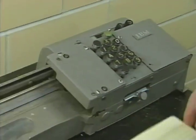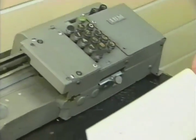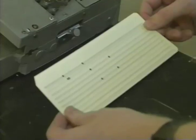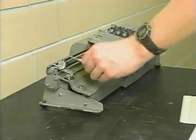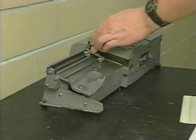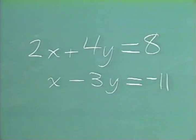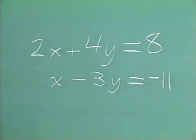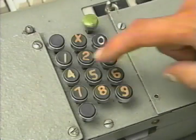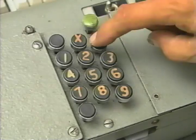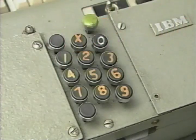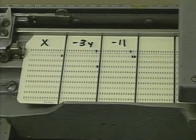You may have noticed that we're using only whole numbers. The ABC did not use floating decimal points, so you scale up the numbers until everything is to the left of the decimal point. We'll also make the card for the second equation: x minus 3y equals negative 11, so we enter 1, minus 3, and minus 11. Notice that to make a number negative, we type a 0 for the first digit; if it's blank, it's assumed positive.